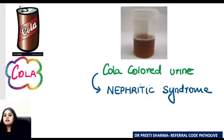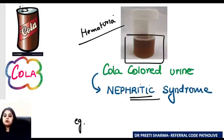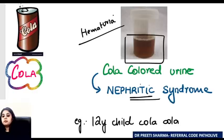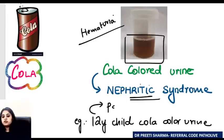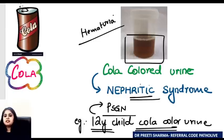Cola color urine is indicative of blood in the urine — hematuria — and is indicative of nephritic syndrome. For example, a 10 or 12 year old child with cola color urine suggests post-streptococcal glomerulonephritis, the most common nephritic syndrome in children. PSGN is a pediatric disorder and because it is nephritic the child will have hematuria — the mother says the child is passing cola color urine.